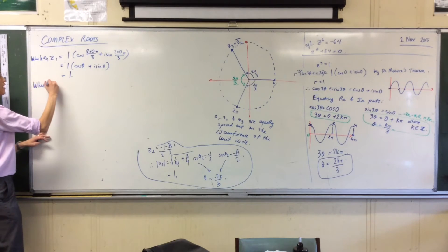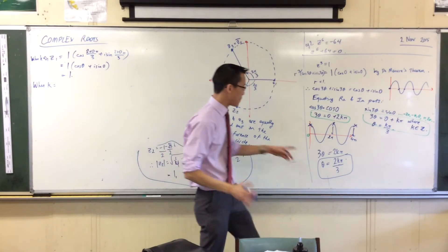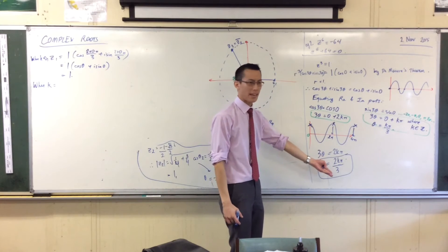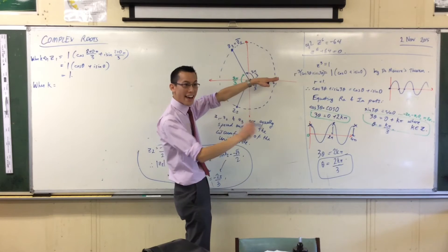Now, I can try other values of k, but think about what it means to try, like, what if I said k equals 100? What would that mean? It means every time I go and add on to k, I'm getting a bigger and bigger angle.